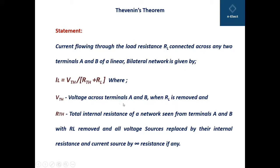Here VTH is the Thevenin's voltage, which is the voltage across terminals A and B when RL is removed. RTH is the Thevenin's resistance — the total internal resistance of the network seen from terminals A and B with RL removed, all voltage sources replaced by their internal resistance, and current sources replaced by infinite resistance.